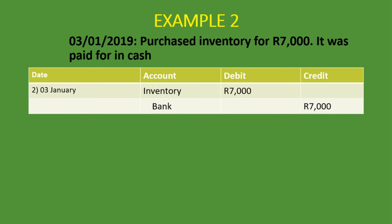Let's do another example. You purchased inventory for 7,000 rand, paid in cash. The two accounts are inventory and bank. Inventory is debited because it's coming in and it's an asset. Bank is credited because money is going out of the bank account to buy the inventory — bank is an asset that decreases on the credit side. That's why we have bank of 7,000 rand on the credit side. Now let's do the T-account for both bank and inventory.